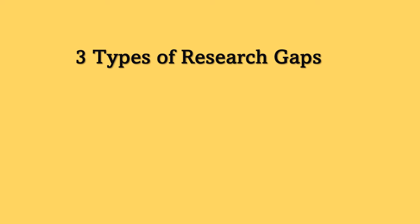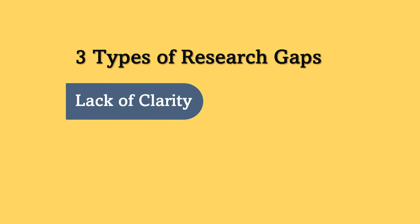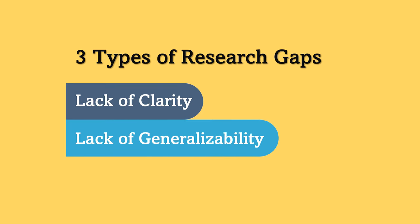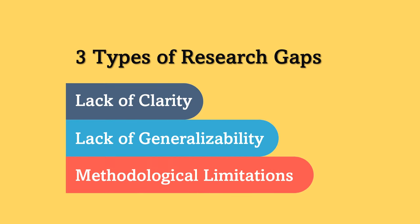Generally, there are three types of research gaps in academic research, which can be in the form of a thesis, paper, or research project. I have named them as lack of clarity, lack of generalizability, and methodological limitations. I will review these three types and provide three examples for each.